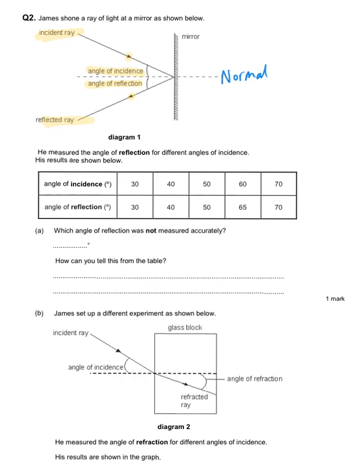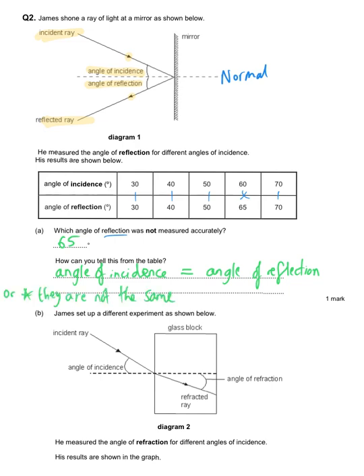We have a table with angle of incidence along the top and angle of reflection along the bottom. We need to identify which one is not measured correctly. The values are 30–30, 40–40, 50–50, 60–65, and 70–70, so the incorrect angle of reflection is 65. The reason it's not correct is that it should be the same as the angle of incidence — all the others are equal, but these two are not the same.